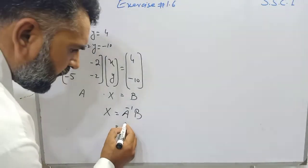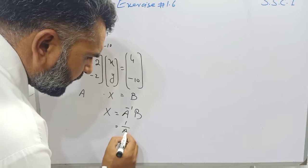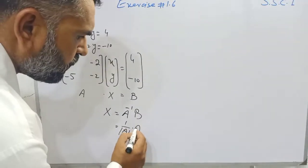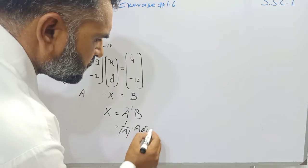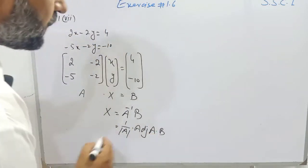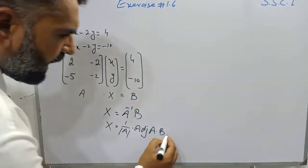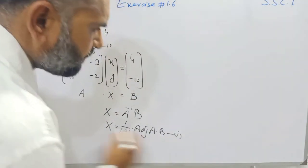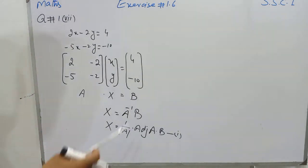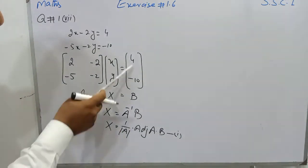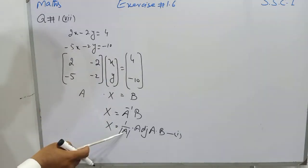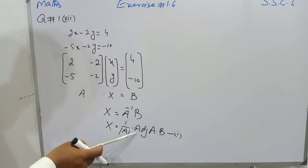We have the next matrix. The inverse is equal to one over the determinant of that matrix, multiplied by the adjoint of that matrix, and b is multiplied. This is equation number one. Now if we go to matrix b, as it is matrix x equals b, we need the determinant of matrix A and the adjoint of matrix A.